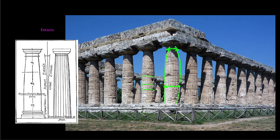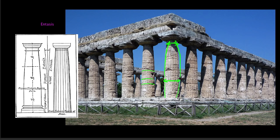Entasis also emphasizes the verticality of the temple — because the columns get narrower as they go up, the shaft seems taller than it really is, since things that are farther away appear smaller. The Greeks are thinking about human perception: not just the abstract idea of math and geometry, but actual human experience, which says something about ancient Greek culture. The entasis also gives the shaft a sense of almost elasticity, as if it is bearing the weight of the stone above it.